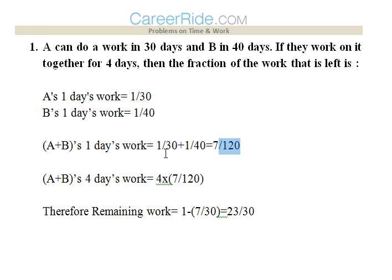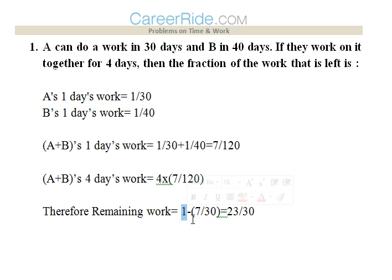Now if we want to find A plus B's four day work after which both have stopped, A plus B's four day work would be 4 into 7/120, that is 7/30. Now we need to find the remaining work. Since A plus B have worked 7/30, the remaining work would be 1 minus 7/30, that is 23/30. That would be the answer.